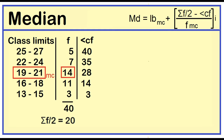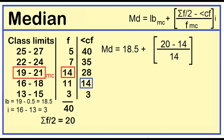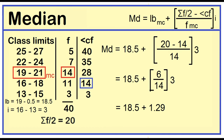The median class is 19 to 21, and its frequency is 14. Since the data values are whole numbers, subtract 0.5 from the lower limit to find the lower boundary. The lower boundary of the median class is 18.5. To find the class width, subtract two consecutive lower limits: 16 minus 13 is 3. Median equals 18.5 plus (20 minus 14) divided by 14, times 3. This equals 18.5 plus 1.29. The median is 19.79.